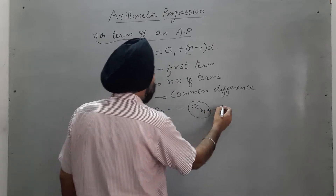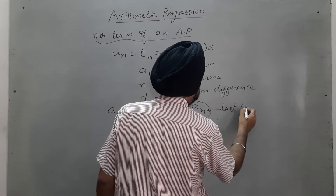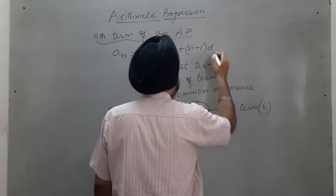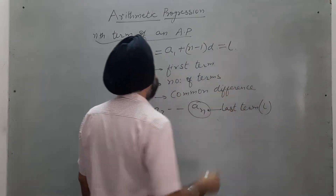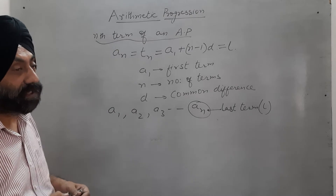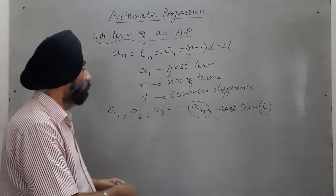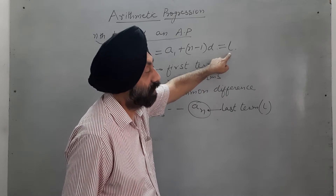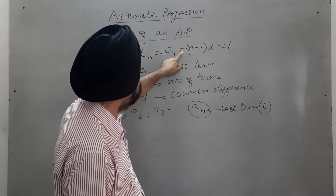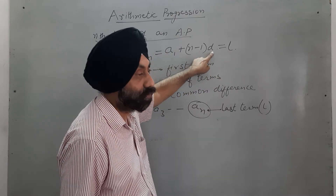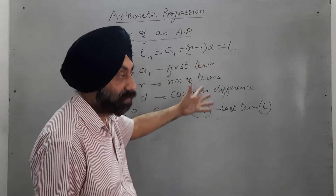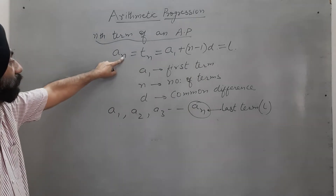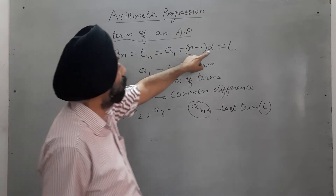The last term of an AP is also equal to the Nth term, so the last term L = A₁ + (n minus 1) × D. This is the formula used to find the Nth term or to calculate the last term.